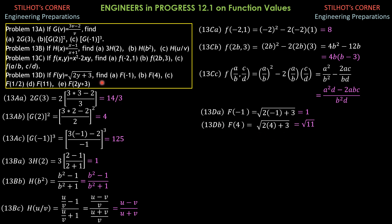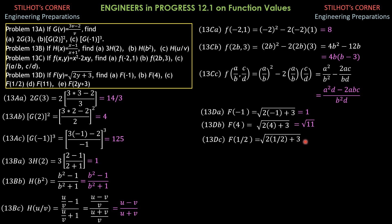Then 13d sub c, f(1/2): f(1/2) is square root of (2 times 1/2 plus 3). This is 1 plus 3, and square root of 4 is 2. So the answer is 2.